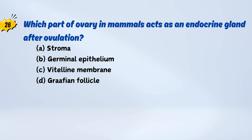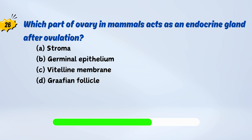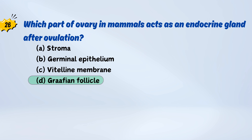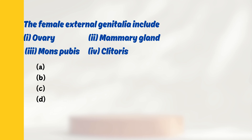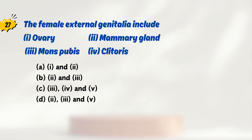Which part of ovary in mammals acts as an endocrine gland after ovulation? The female external genitalia include?